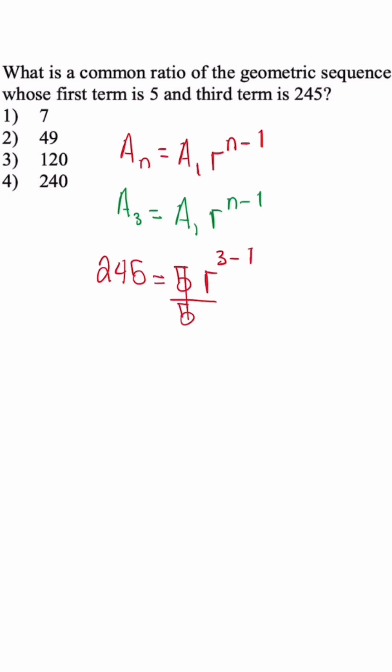So we're going to divide by 5 to get r by itself. So we have 49 is equal to r squared.